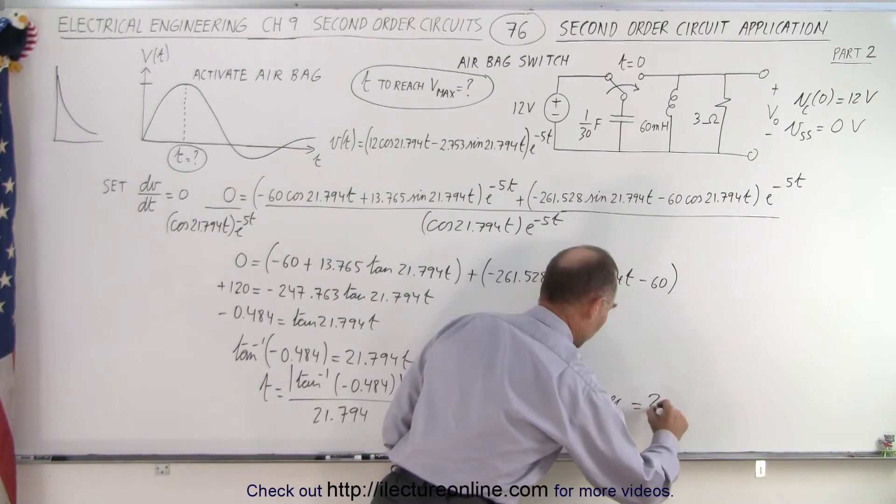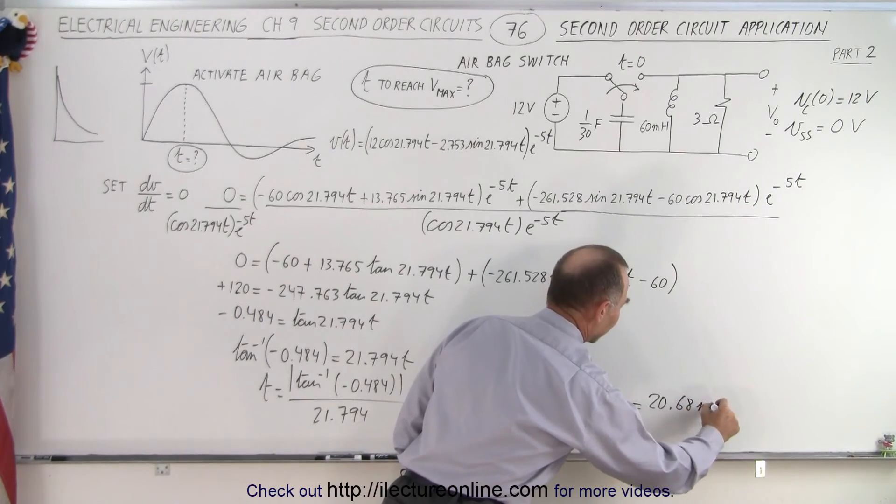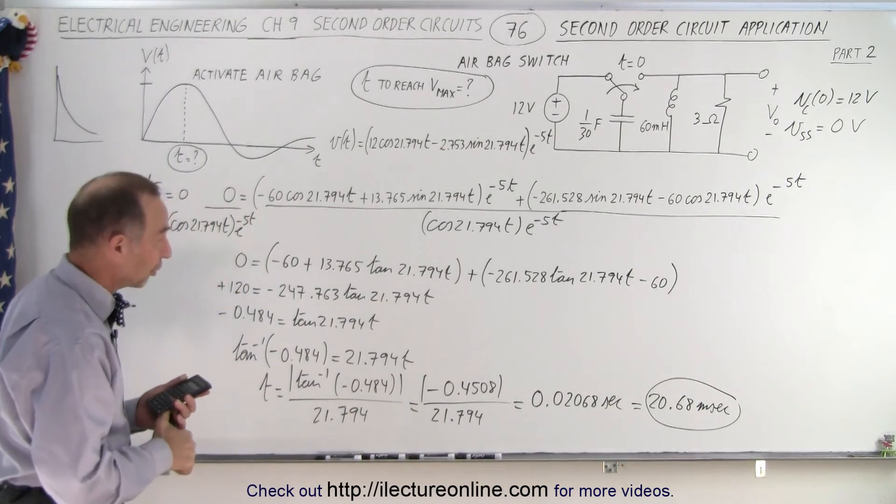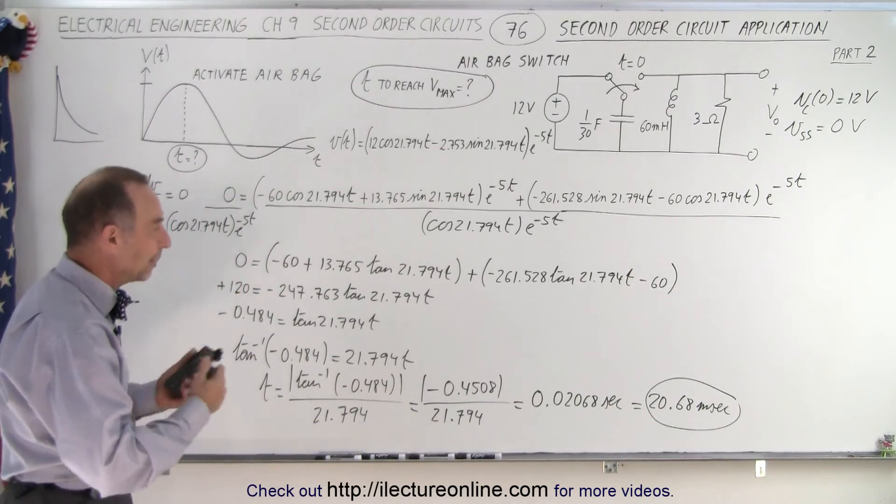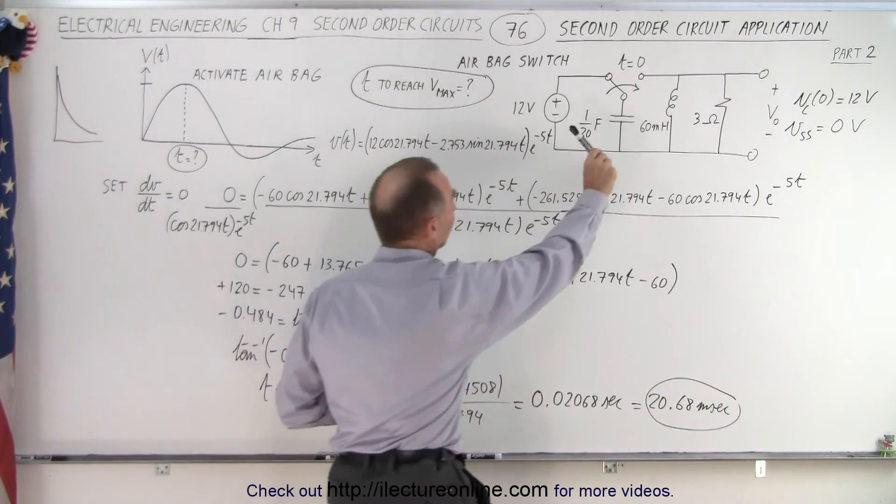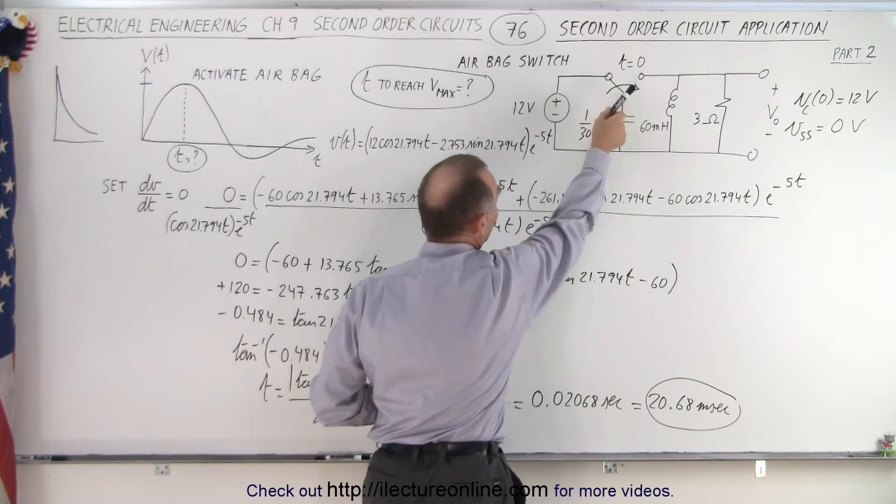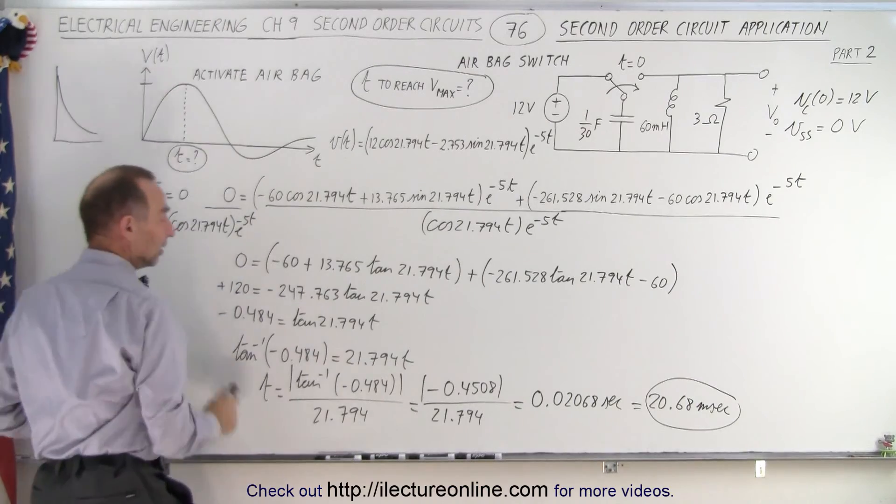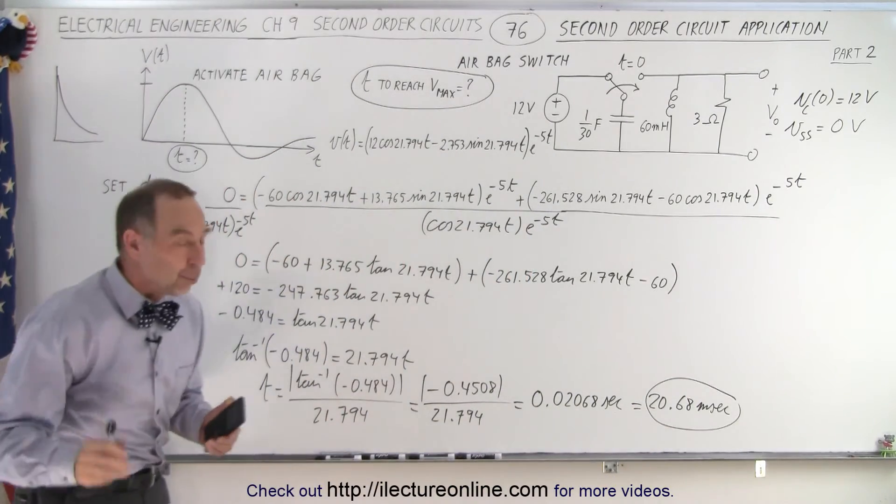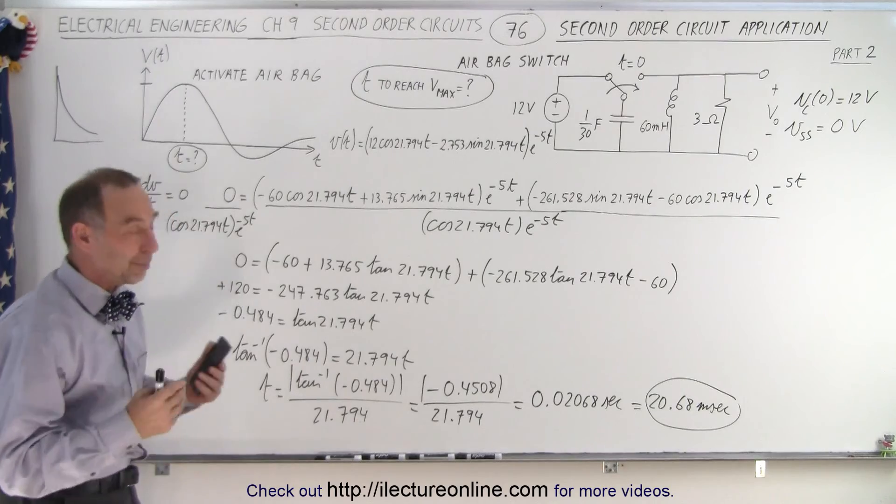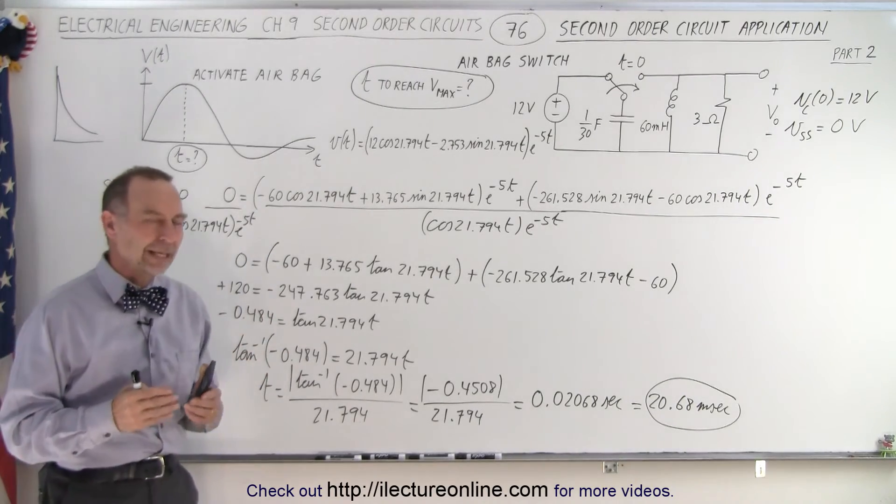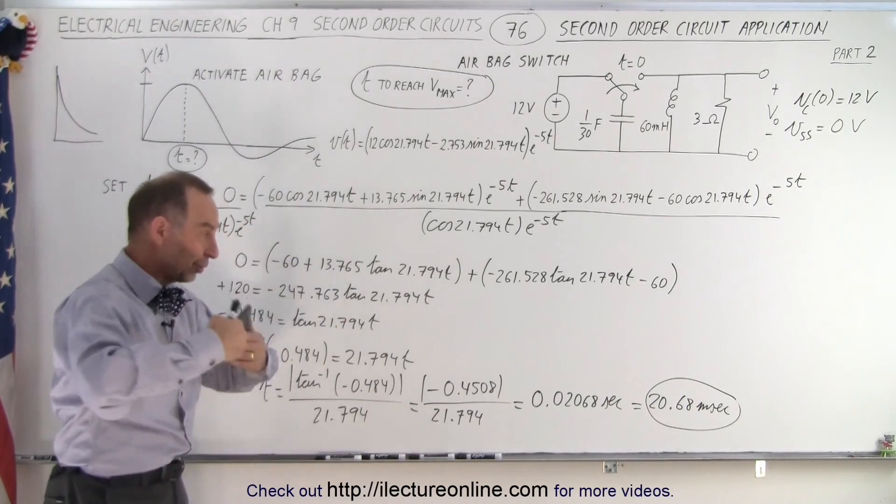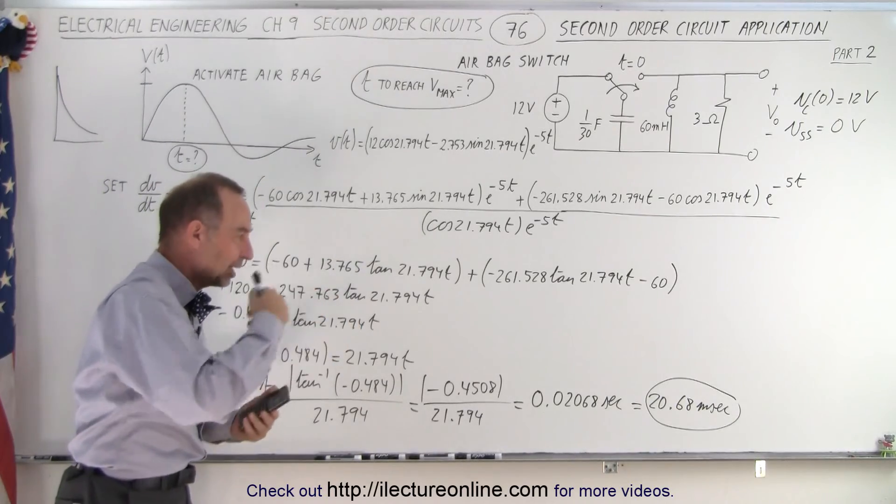Of course, if you then convert that, that's equal to 20.68 milliseconds. And that's an interesting application of this particular circuit - it is a circuit to activate the switch in an airbag system. So what happens is at time equals zero, collision happens, the switch goes to the other side. When that happens, you make contact and you watch the voltage across the resistor rise to maximum value. It reaches a maximum value in about 21 thousandths of a second, 20 milliseconds, where the airbag gets activated. In that small amount of time, you will not have moved very much. You will be protected from hitting the steering wheel or the dashboard by the airbag inflating and protecting you from hitting something hard.